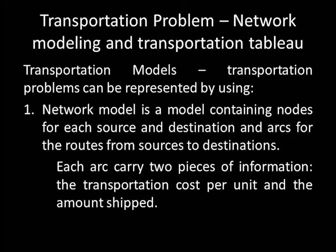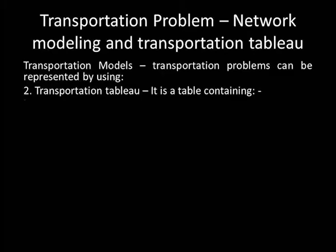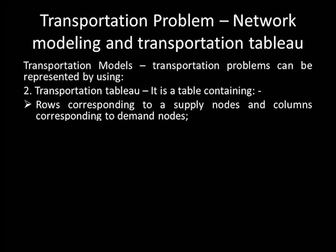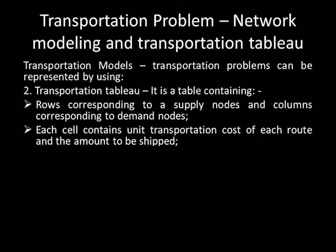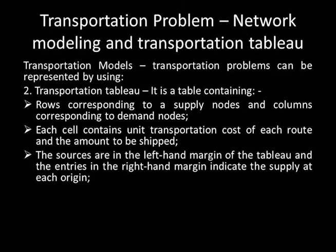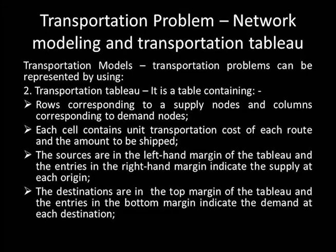Once we have a network model of a transportation problem, we can easily develop a transportation tableau from it. A transportation tableau is a table with rows corresponding to supply nodes and columns corresponding to demand nodes, meaning the number of rows equals the number of supply nodes and the number of columns equals the number of destination nodes. Each cell contains the unit transportation cost of each route and the amount to be shipped.